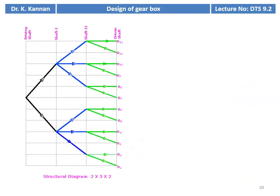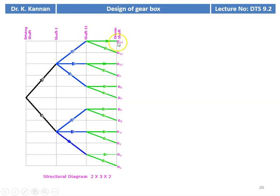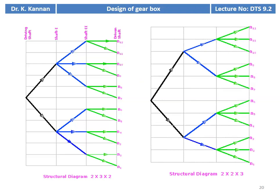This is the structural diagram for 2×3×2. There are three stages: driving shaft, shaft 1, shaft 2, and shaft 3 (the driven shaft) — first stage, second stage, and third stage — giving 12 steps. Between the driving shaft and shaft 1: two output speeds. From shaft 1 to shaft 2: three different speeds for each input. From shaft 2 to the driven shaft: two different speeds — giving 12 output speeds. Another 12-speed arrangement is 2×3×3, and yet another is 4×3, also giving 12 speeds.